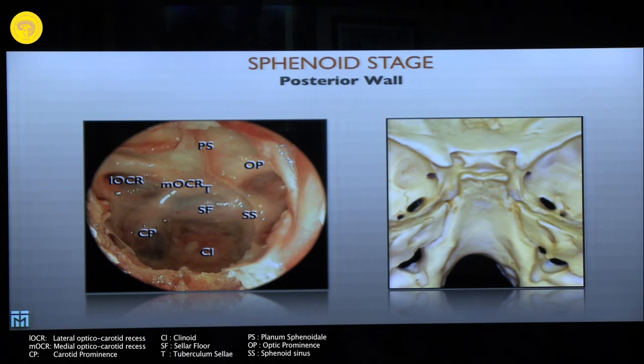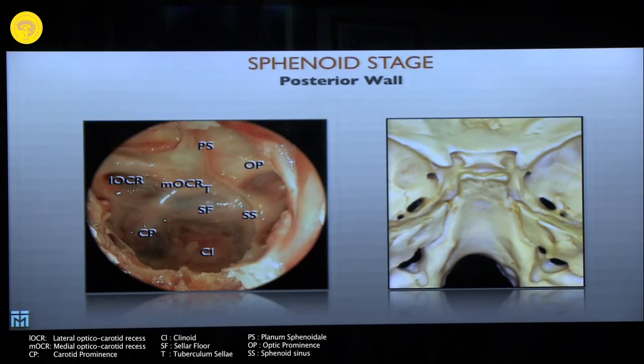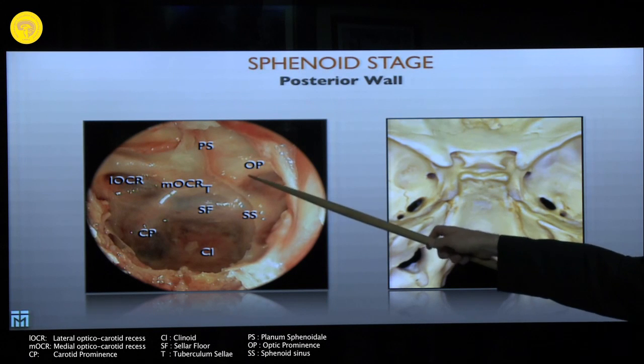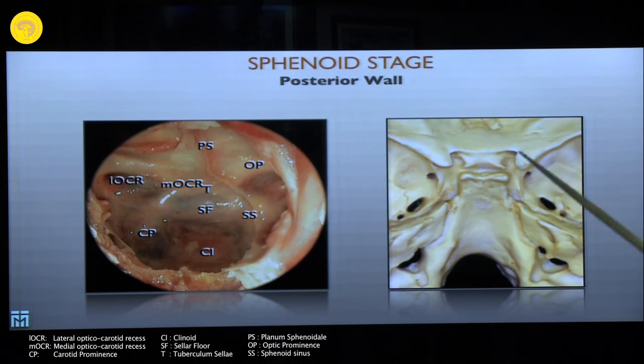An important difference between transcranial and transnasal approaches: in transcranial surgery you begin from a safe area and then reorientate to find your target. In endoscopic skull base surgery you are immediately adjacent to neurovascular structures. You must be certain where to open and where to take care not to harm neurovascular structures. Always remember what is on the other side of your bony structures — you must be familiar with this anatomy.